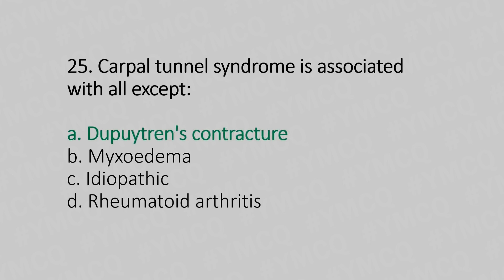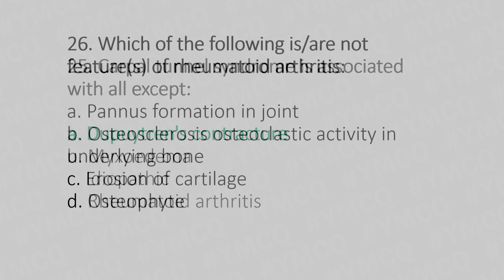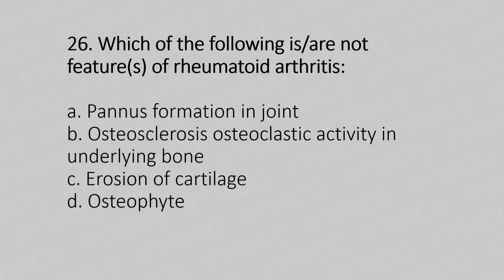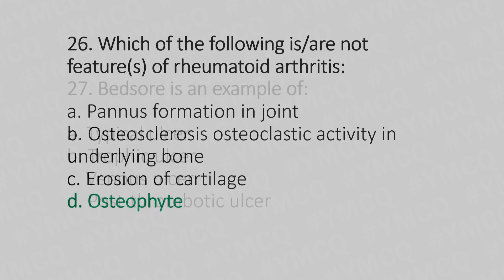Now let's move to question number 26. Which of the following is not a feature of rheumatoid arthritis? Option A: pannus formation in a joint. Option B: osteoclastic activity underlying the bone. Option C: erosion of the cartilage. Option D: osteophyte. And the answer is Option D — osteophyte.